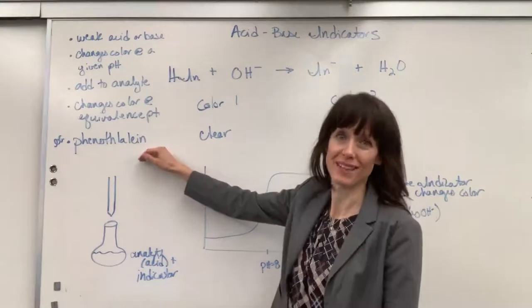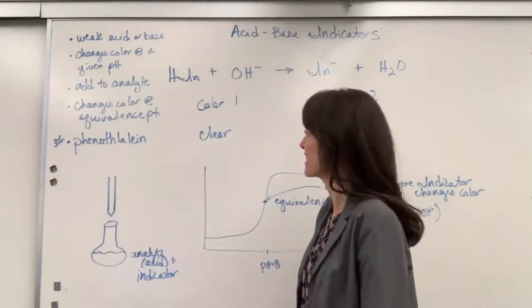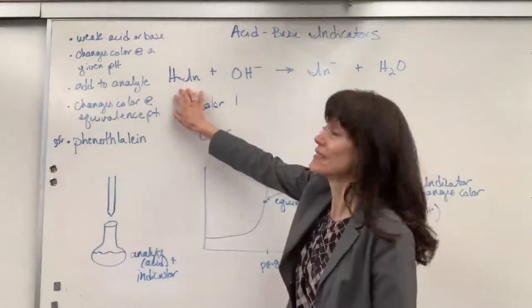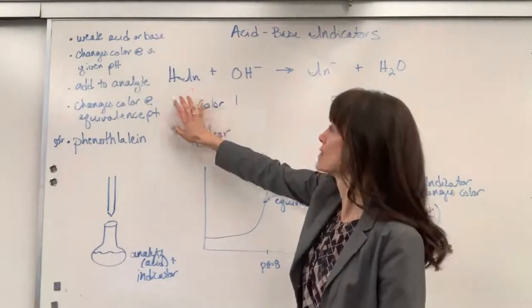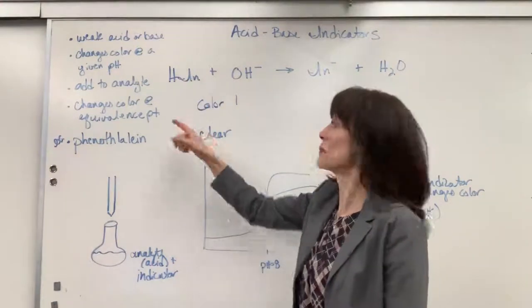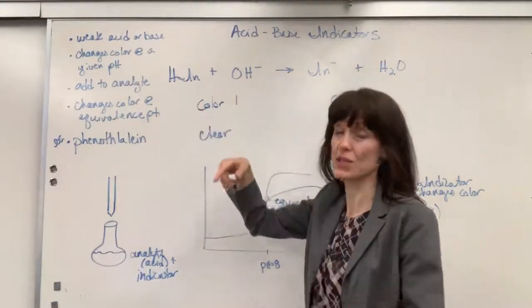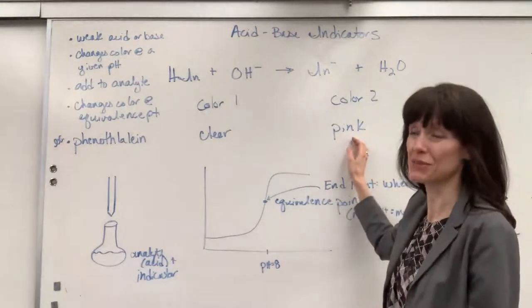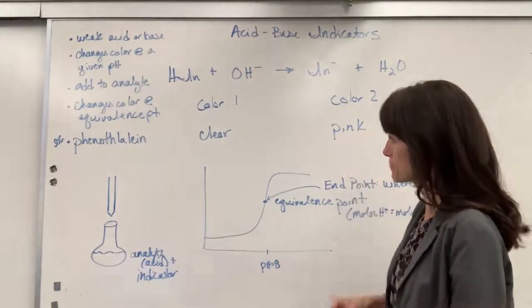My favorite example is phenolphthalein, because that's my favorite indicator. It's clear when it's the acid. But as soon as all of that acid has been reacted, it's been consumed, that hydrogen has 100% been donated, reacted with that hydroxide, it turns pink. A really pretty, brilliant pink.